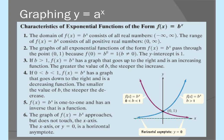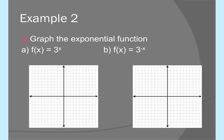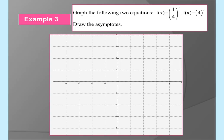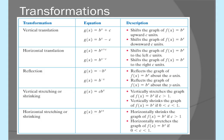We talked about the specifics of parent functions: they have a horizontal asymptote at zero, which changes with a vertical shift. The parent function also has a y-intercept at one. If the base is a whole number it's increasing left to right like the blue line; if it's a fraction or decimal it's decreasing like the red line. If you didn't know it you could plug in points.